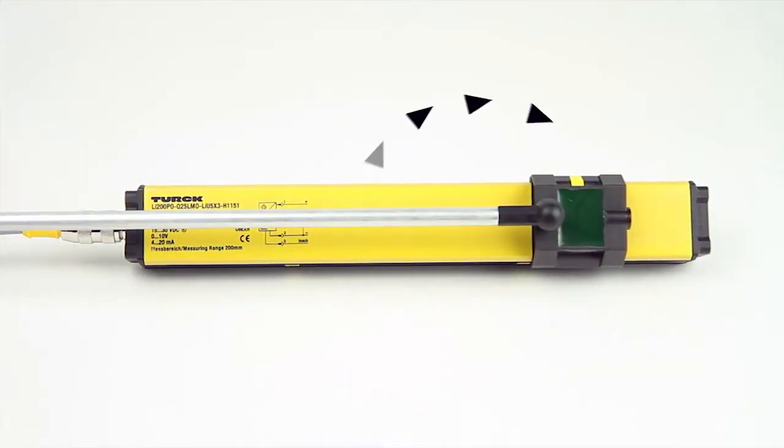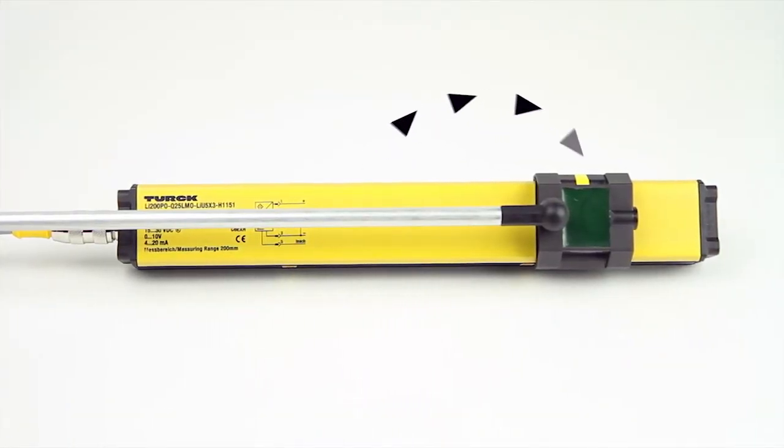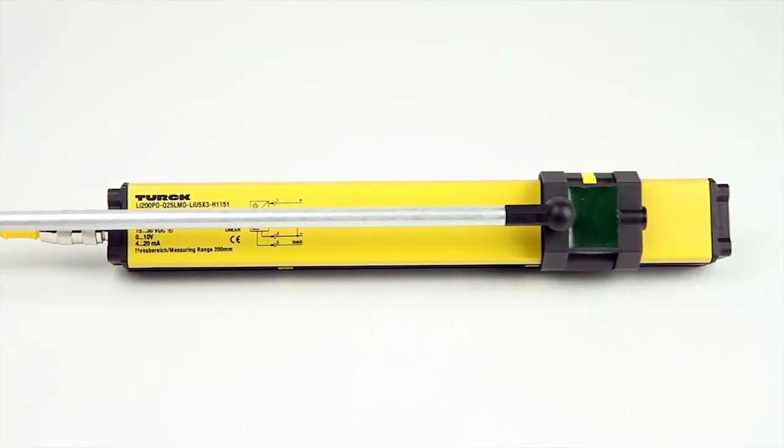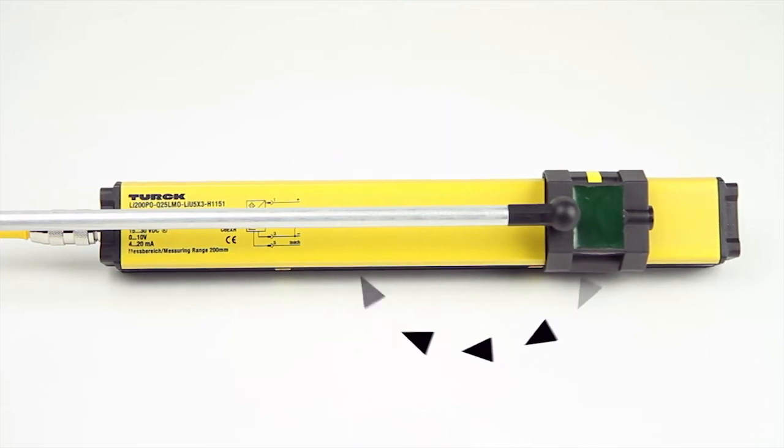First, the emitter coils are excited with a high-frequency AC field, which in turn charges the position element. The position element then resonates the charge into the receiver coils of the sensor.